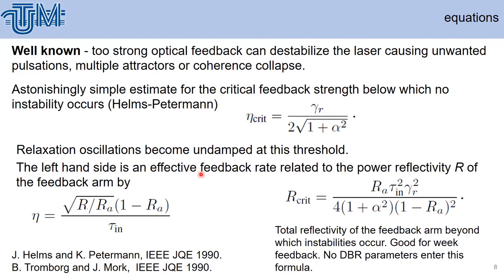We can estimate the critical feedback strength from the well-known Helms-Petermann formula, where the relaxation oscillations become undamped at threshold. The left-hand side of this formula is the effective feedback rate with power reflectivity R. We can obtain analytically the formula for the feedback reflectivity R at which instability occurs. For weak feedback, no DBR parameters enter this formula.